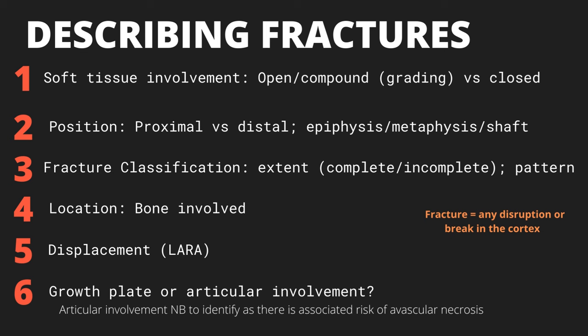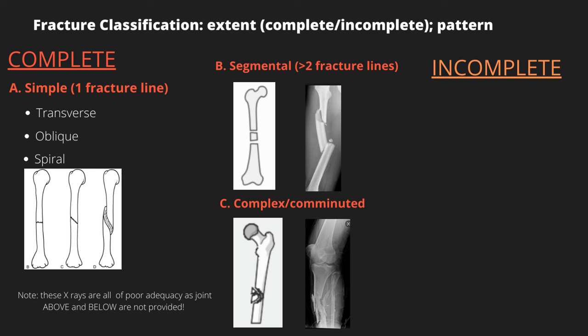Describe the exact bone involved — is it the humerus, the femur, the tibia, or the fibula? And is it on the left or the right? Comment on any displacement of the bone with reference to LARA, which will be elaborated on shortly. Finally, look to see if there is any growth plate or intra-articular involvement. Remember that x-rays supplement a history and examination, so you should also comment on whether it is a pathological or stress fracture based on the history provided, and comment on the neurovascular status of the affected limb.